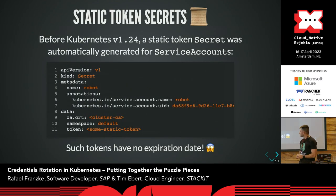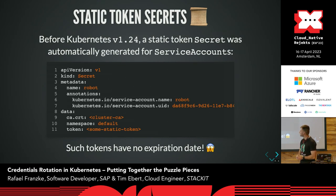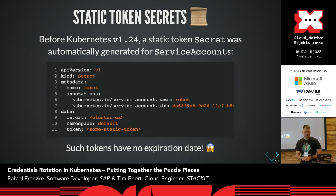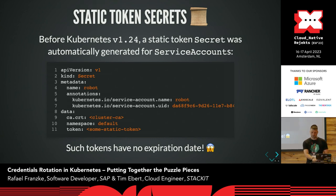To complete the service account story, one word also about static token secrets. Before Kubernetes 1.24, the kube-controller-manager was generating a so-called static token secret for each service account, and you couldn't disable that in any reasonable way. It was always generating such a token which has no expiration date at all — that's something we actually don't want, and it's obviously a security risk.